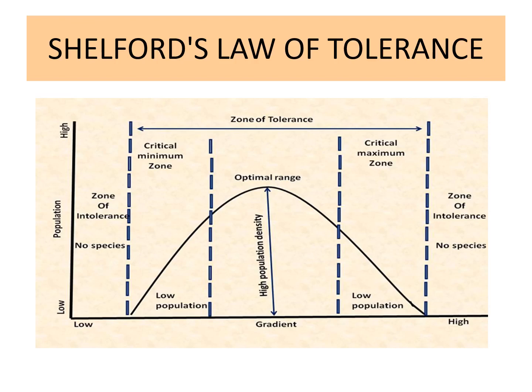In the graph, population is marked from low to high and the gradient from low to high. There is a zone of tolerance where individuals can reproduce successfully, and it shows a bell-shaped curve. At the center top — the optimum range — we see the highest population density. As we go towards the left or right, the number of individuals falls. That zone on either side is known as the critical minimum zone on the left and the critical maximum zone on the right, where population is present but in lesser amounts.